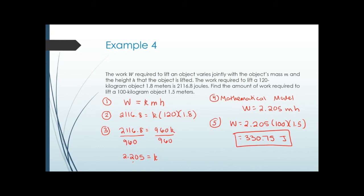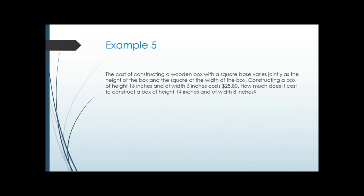That's joint variation — everything that follows the word 'jointly' is multiplied together. Example five: the cost of constructing a wooden box with a square base varies jointly as the height h and the square of the width w. Constructing a box of height 16 inches and width 6 inches costs $2880. How much does it cost to construct a box of height 14 inches and width 8 inches? Step one, model: cost C varies jointly, so C equals k times H times W squared — the word 'square' gives the exponent.